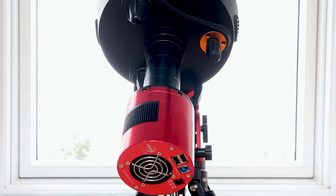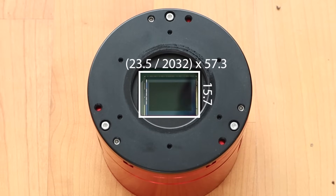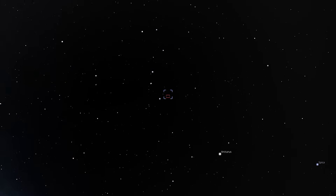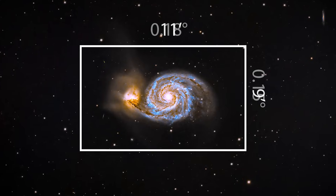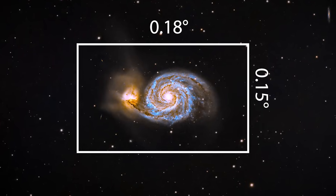Now let's switch to my Edge HD 8H with its 2032 millimeter focal length using the same camera. At this focal length, my horizontal field of view is 23.5 divided by 2032 times 57.3, which is about 0.66 degrees, and my vertical field of view is 0.44 degrees. That's over three times narrower compared to my 600 millimeter telescope, and perfect for smaller objects like M51 the Whirlpool Galaxy, which is only about 11 by 9 arc minutes — about 0.18 degrees in angular size.